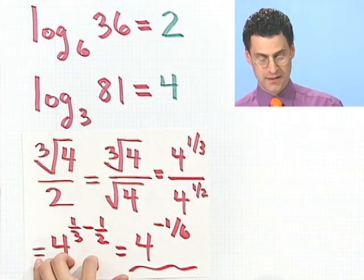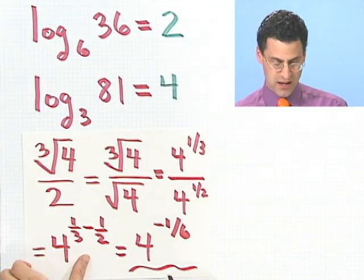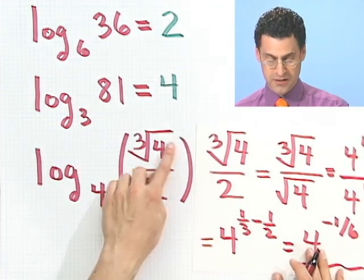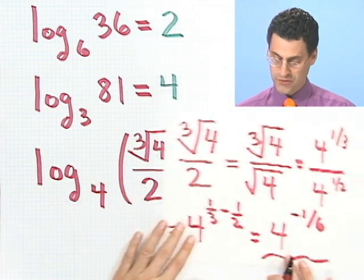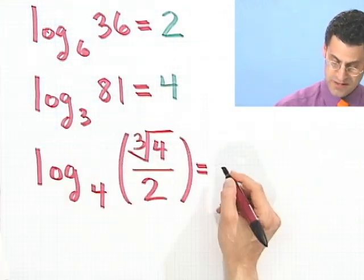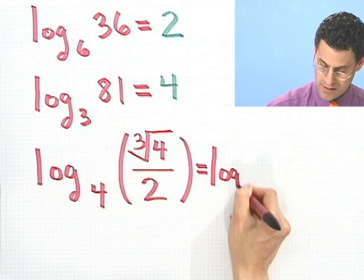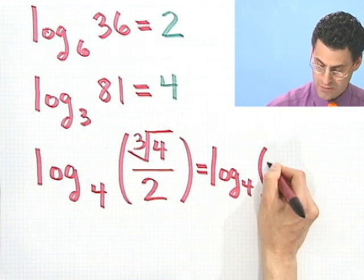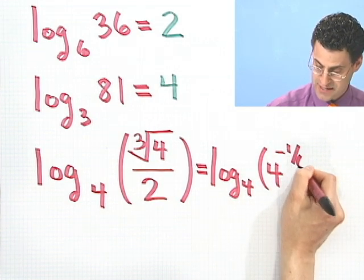So in fact, after all is said and done, I see that this thing right here, which I remind you appears right here, that equals 4 to the minus 1 sixth. So this actually is just log base 4 of 4 to the minus 1 sixth.